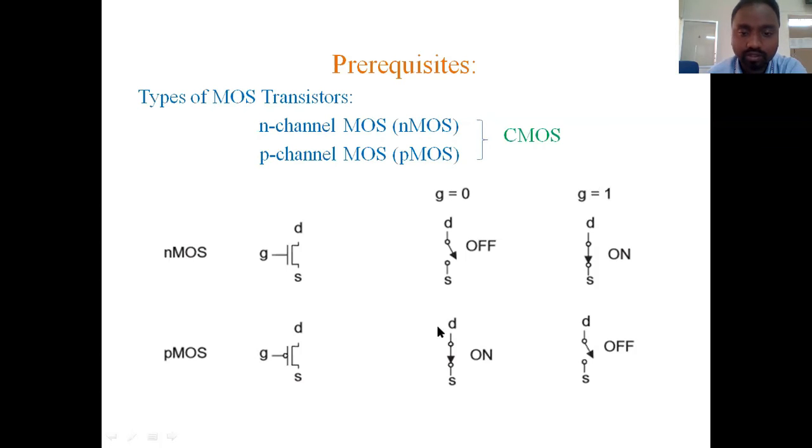Same as in condition of pMOS, if we give input g equals to 0, then it will be on condition. And if g equals to 1, it will be off condition. So for pMOS, for 0 on, 1 off. For nMOS, 0 off and 1 on.